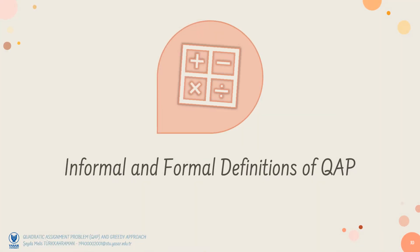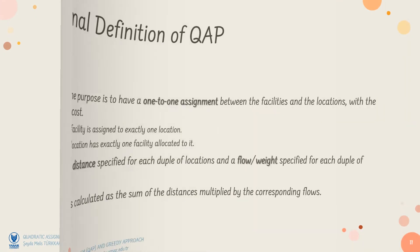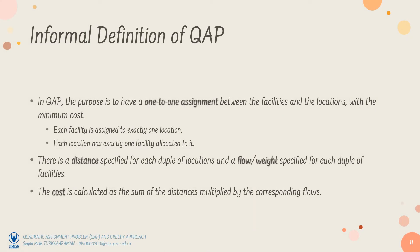Now, let me define the QAP in both formal and informal manner. In QAP, we try to have a one-to-one assignment between the facilities and the locations with the minimum cost. A one-to-one assignment means that each facility will be assigned to exactly one location, and each location has exactly one facility allocated to it.